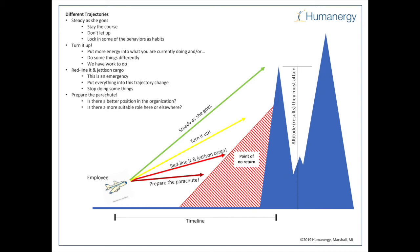The third line is actually aiming for the middle of the first mountain. This is called the red line or jettison cargo line. This is an emergency. We have to put everything into the trajectory change, and potentially stop doing some things to get the trajectory where we need it. Once it's there, we can start to look at how we add things and build. But this is dire, this is a crisis we need to address.